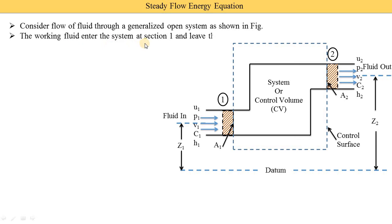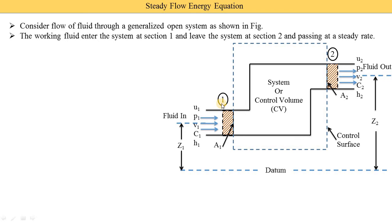The working fluid enters the system at section 1 and leaves the system at section 2, passing at a steady rate. It passes at the steady rate because the theory name is the steady flow energy equation. If you don't know what steady and unsteady flow are, I have provided a link on the card at the top right of your screen.